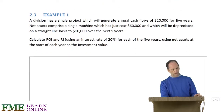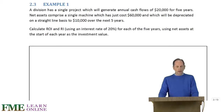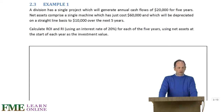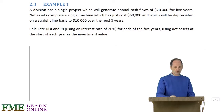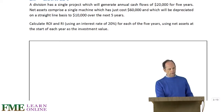So let's have a look at an example just to see if it makes sense. The division has a single project which is going to generate annual cash flows of $20,000 for five years.